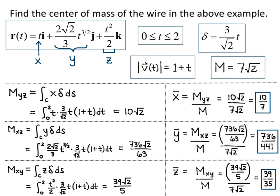So our center of mass has x, y, and z components, and it's at the point (10/7, 736/441, 39/35). That's how you use line integrals to determine the mass of a thin wire in space and the center of mass of that wire in space.